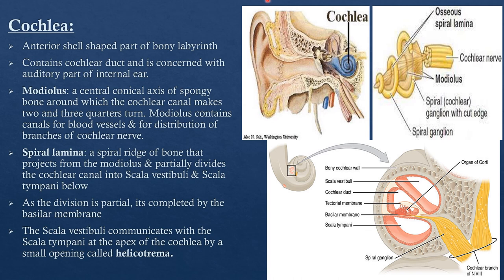The cochlea is the most anteriorly placed part of the bony labyrinth. It is shaped like a snail shell and contains the cochlear duct, concerned with the auditory pathway. The central conical axis around which the bony canal of the cochlea makes two and three-quarter turns is known as the modiolus. The modiolus contains blood vessels and the spiral ganglion, providing the central axis around which the cochlea turns.